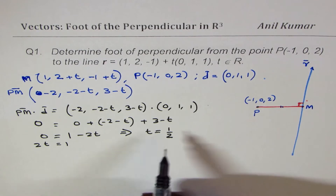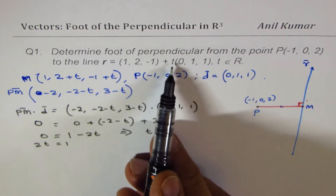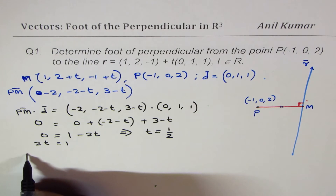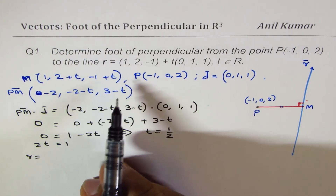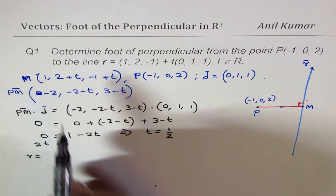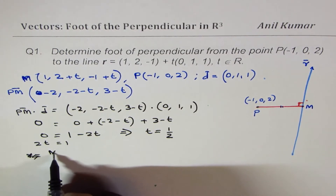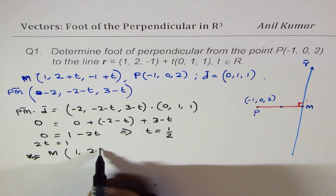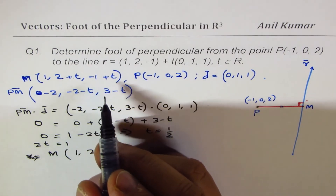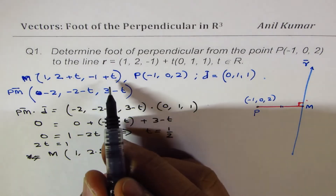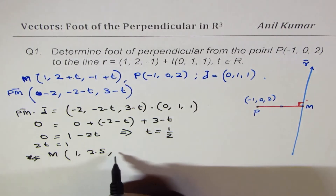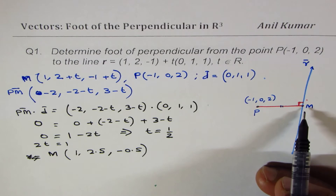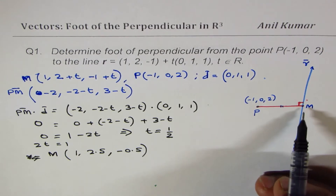Since t equals 1/2, we can find the point M on line R. Substituting t = 0.5 into the general point gives: x = 1, y = 2 plus 0.5 = 2.5, and z = minus 1 plus 0.5 = minus 0.5. So the coordinates of point M, the foot of the perpendicular, are (1, 2.5, -0.5). That is one way of doing it.